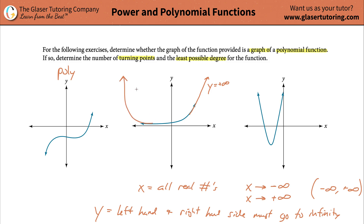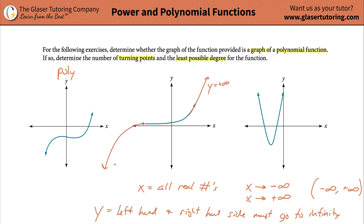In order for this to have been a polynomial, it's got to make a turn up here - that would be fine, it would go to some infinite positive value. Or it's got to make a turn down here. It's got to go to infinity somehow in the y direction on both sides. It doesn't do that, so this one does not satisfy that second condition and therefore it is not a polynomial.